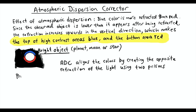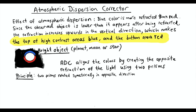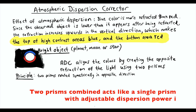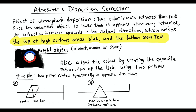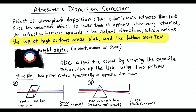The atmospheric dispersion corrector realigns the separated colors so that all the colors from one point of the imaged object converge to one point on the focal plane. It does so by creating the opposite effect of the atmosphere, using two prisms rotated symmetrically opposite to each other relative to the horizontal plane. By doing so, the combined dispersion power of the prisms can be adjusted in the vertical direction to cancel out the atmospheric dispersion. At the optimal position, the red, green, and blue will coincide when the light reaches the image sensor or the eyepiece, and the color fringing will disappear.